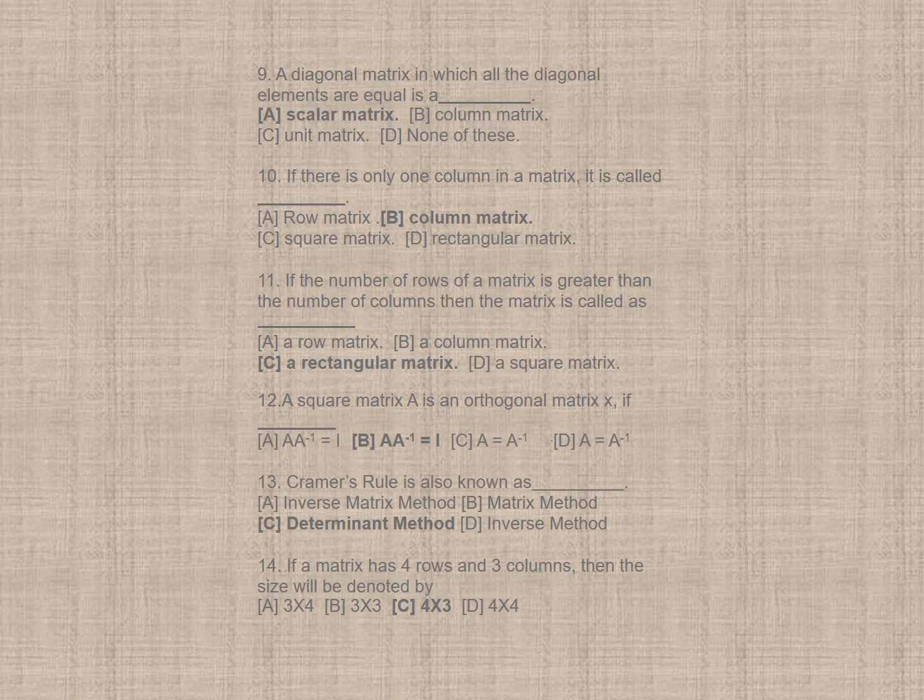Question 9. A diagonal matrix in which all the diagonal elements are equal is, the correct option is A, scalar matrix. Question 10. If there is only one column in a matrix, it is called B, column matrix.